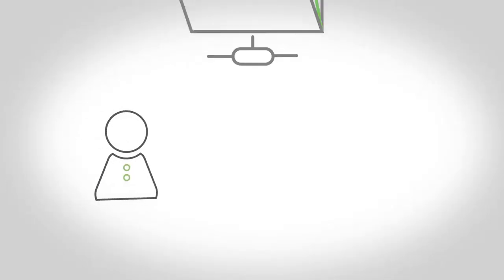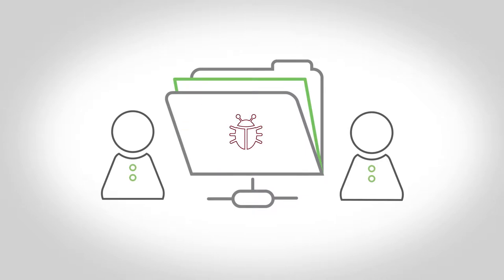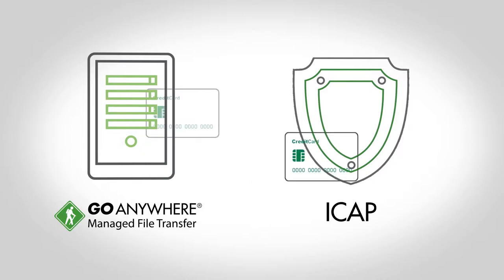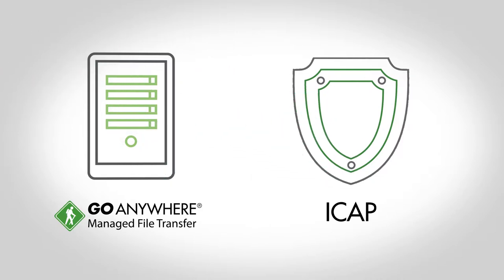But what happens if a user exposes the wrong information, or malware is sent from a trusted partner? Go Anywhere can easily integrate with third-party ICAP inspection solutions to mitigate the risk of mistakenly exposing critical information or letting malware spread through corporate resources.